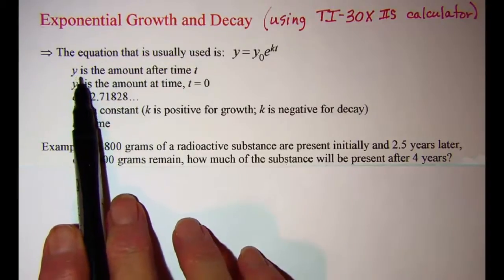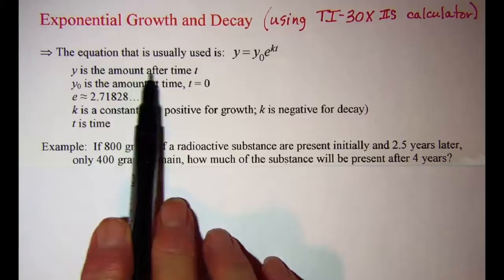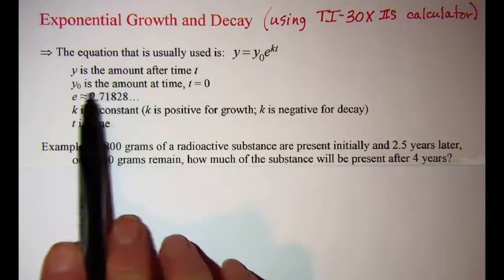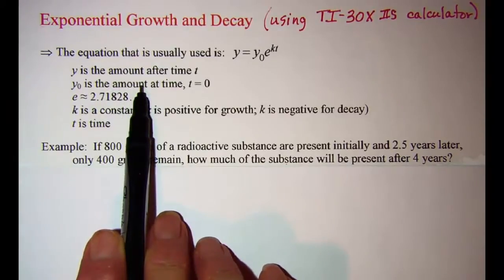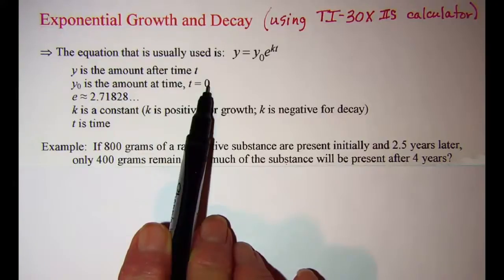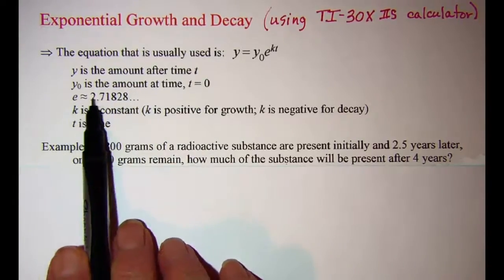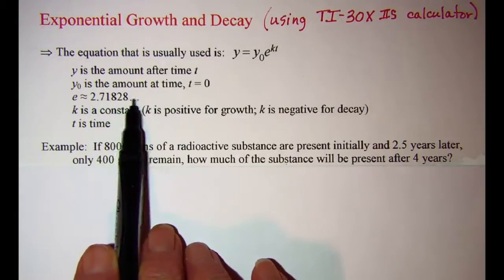The y in this equation is the amount of substance after some time t. The y sub zero is the amount of substance at time t equals zero. e is the irrational number 2.71828.